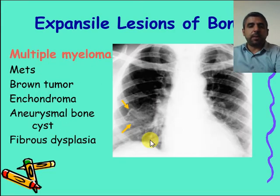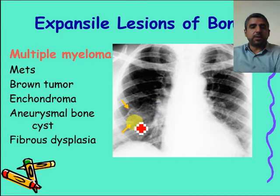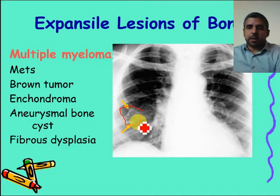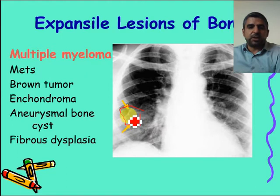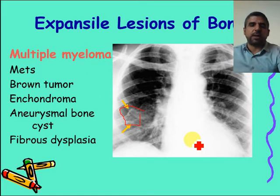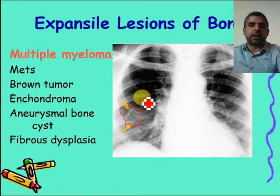Starting with multiple myeloma — you can see a lesion in the rib that is expanding it, making it larger than the normal adjacent rib. Regarding metastasis — this is metastasis from renal cell carcinoma — the bone is completely destroyed, and the lesion is lytic and obviously expanding the iliac crest, resulting in bone expansion to the outside.